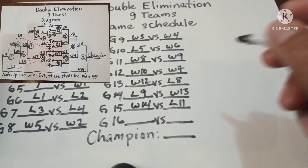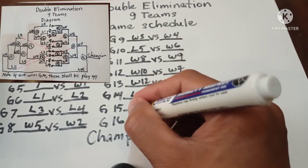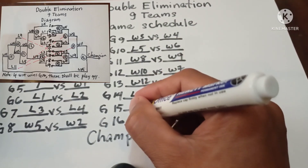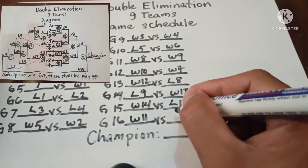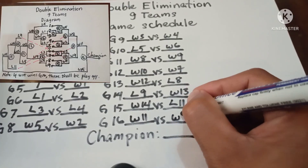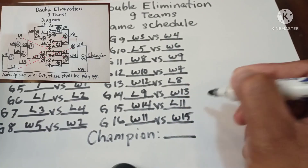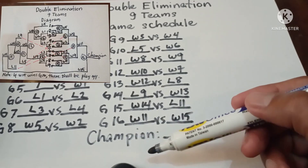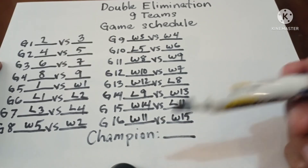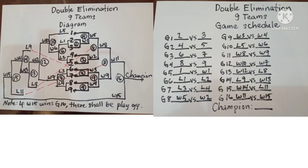Game 16 — Winner 11 vs Winner 15. This is the diagram and game schedule for 9 teams in double elimination.